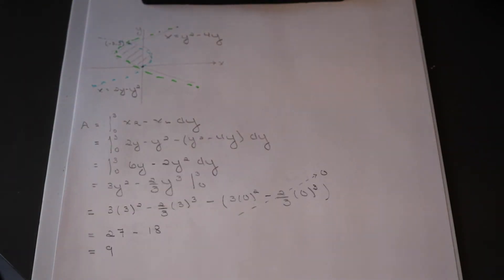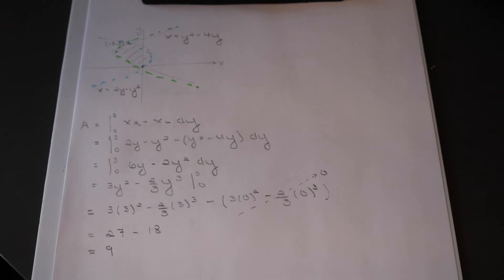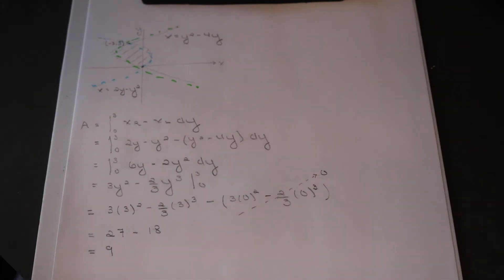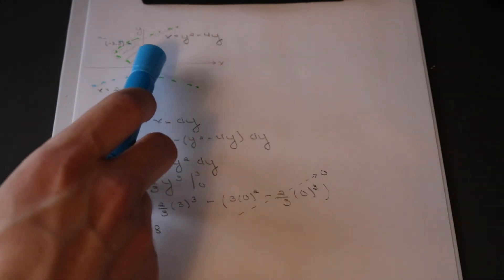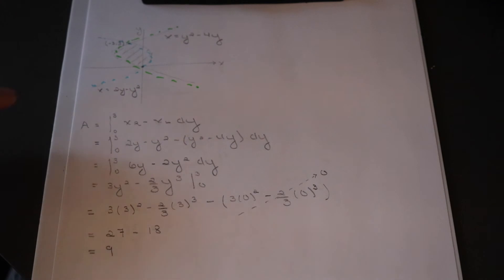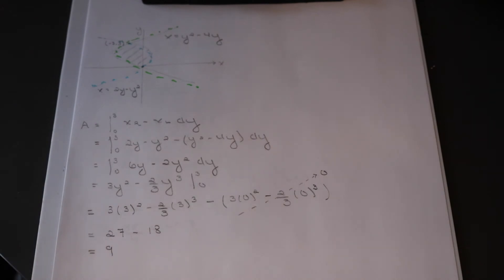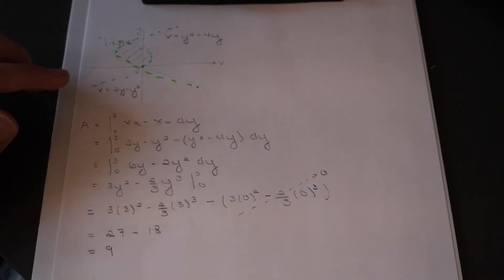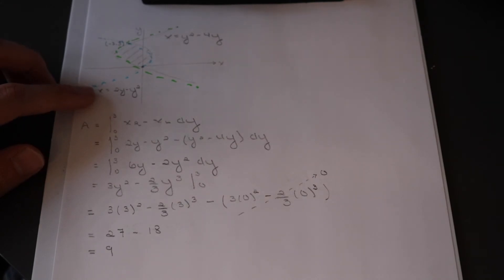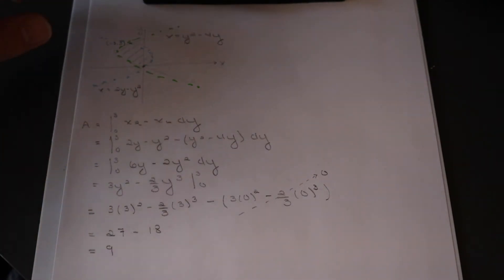Now we work through the second example. The key difference is that we have functions in terms of y rather than x, which changes what our bounds look like and how the problem is solved. When dealing with functions in terms of y, we classify curves as right and left instead of top and bottom. The function to the right is our right function, equivalent to the top function in the x case, and the function to the left is equivalent to the bottom function.